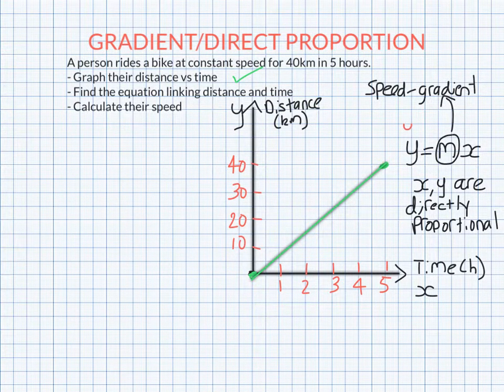y, which is the distance in kilometers, is just 40 times the number of hours. y equals 40x. That is the answer to the second part there.